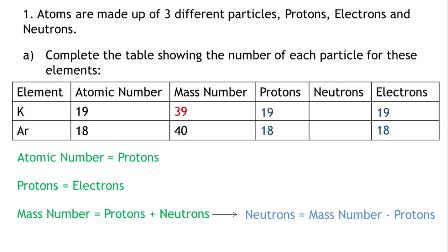Potassium has a mass number of 39 and has 19 protons. 39 minus 19 equals 20. Potassium therefore has 20 neutrons.